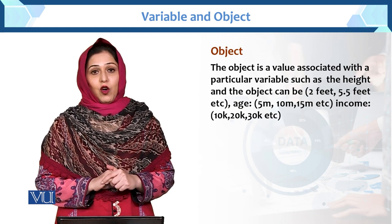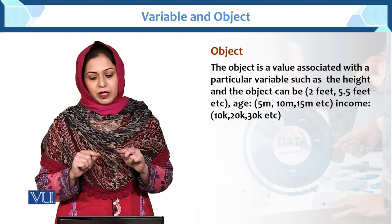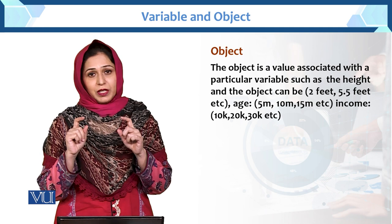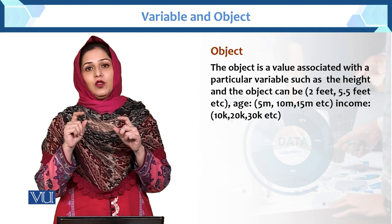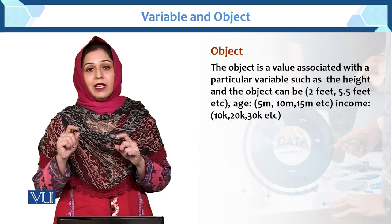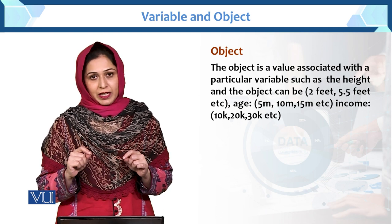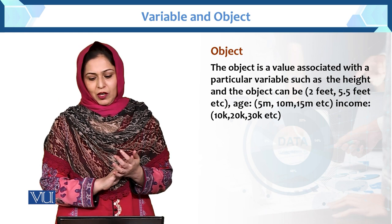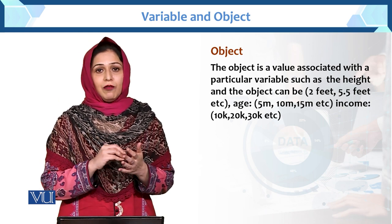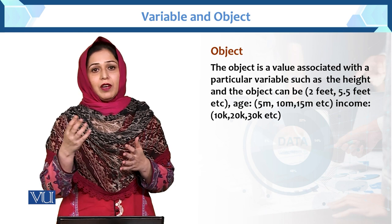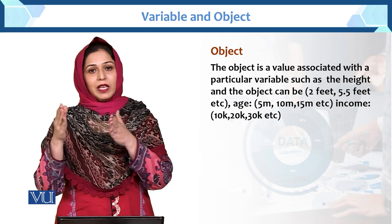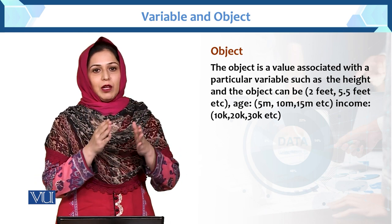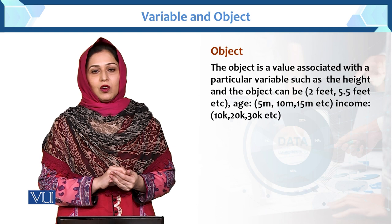Next is the object. The object is a value associated with a particular variable. Ab jo particular variable hai, uski jo hum different measures le rahe hain, that is called the object. Such as height — height humara variable hai, aur height mein object humara kya hoga — the object can be 2 feet, 5 feet, 6 feet, 5.5 feet. Humne usko different numbers mein allot kiya, height ko humne different numbers mein allot kiya — that is called the object.